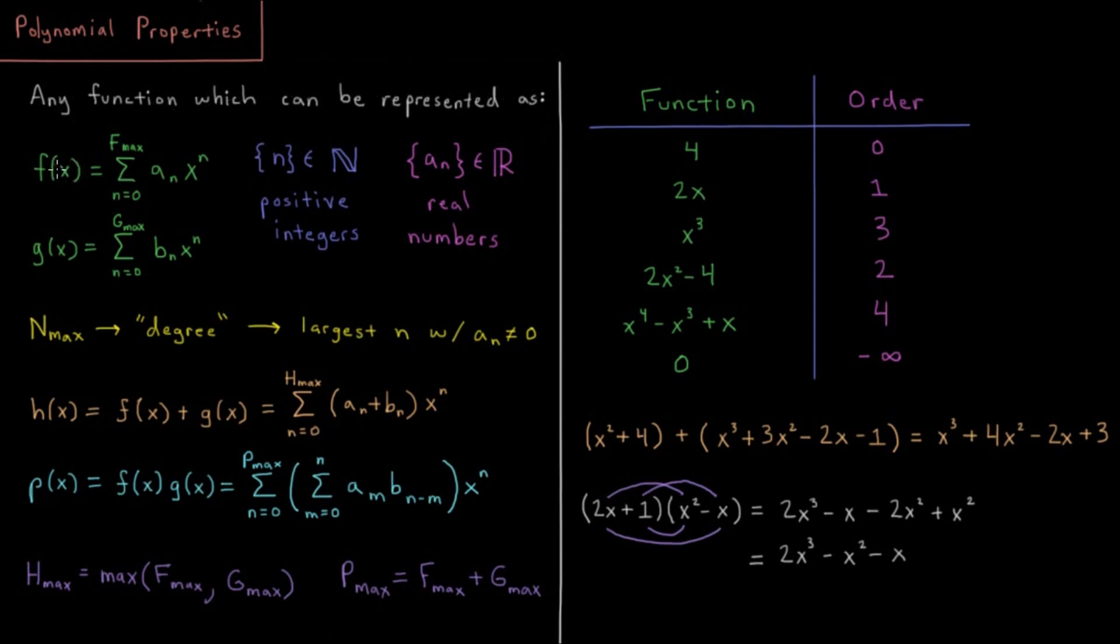If my variable is x, I have a polynomial in x if I can represent this function as a sum from n equals 0 up to some maximum integer f max of a coefficient a sub n times a power of x, x to the n. So these coefficients have to be real numbers, so something between negative infinity to infinity and no imaginary dependence, no square root of negative 1.